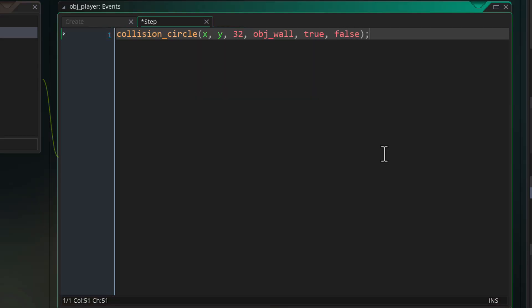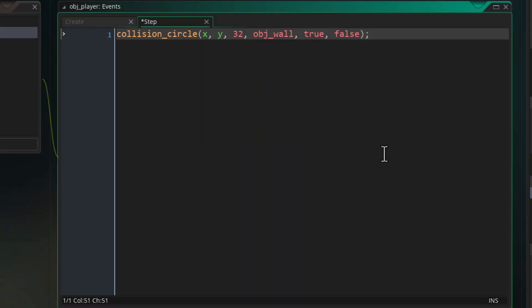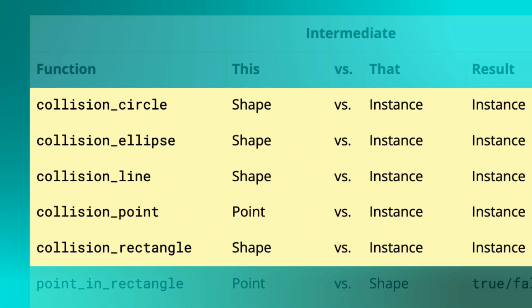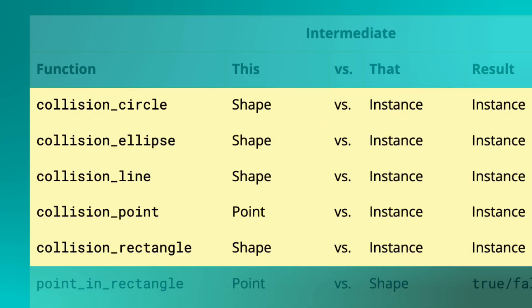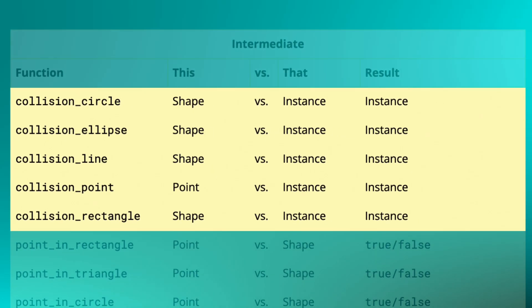Then there is the `not_me` argument. Let's say you're doing a collision check against obj_coin inside an instance of obj_coin — the instance will just find itself because it belongs to the same object you're checking for. So you can set the `not_me` argument to true, in which case the function will ignore the current instance and look for any other instance belonging to this object. If you're checking for an entirely different object, just set this to false. Some other functions in this category are collision_ellipse, collision_line, collision_point, and collision_rectangle — they're just like collision_circle but using different shapes. You can read more about them in the manual.